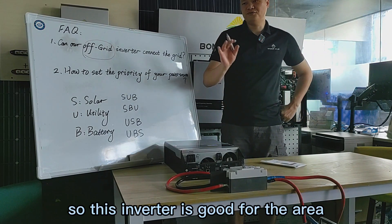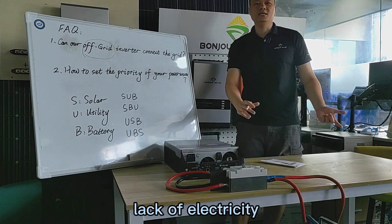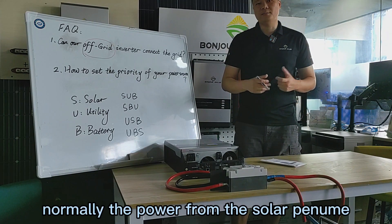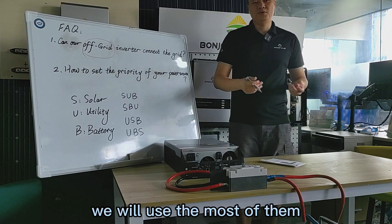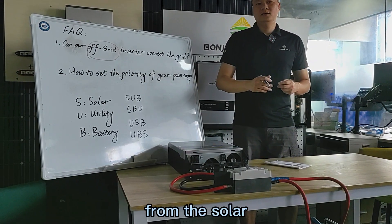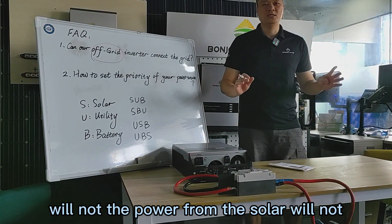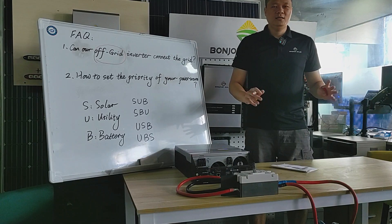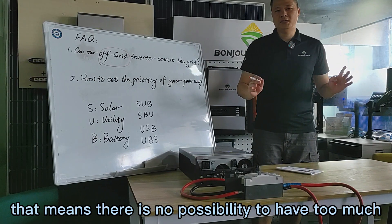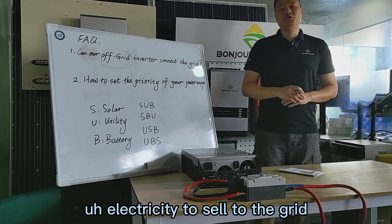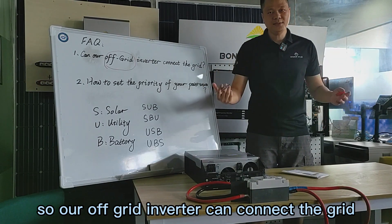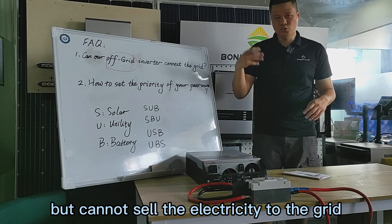Because our inverter is designed as an off-grid inverter, it is good for areas that lack electricity. The power from the solar panel will be used locally, and there is no possibility of having too much electricity to sell to the grid. So our off-grid inverter can connect the grid, but cannot sell electricity to the grid.